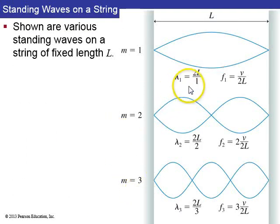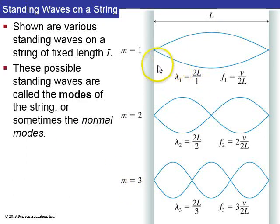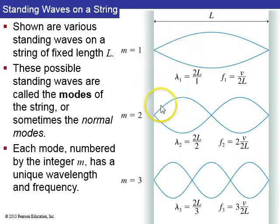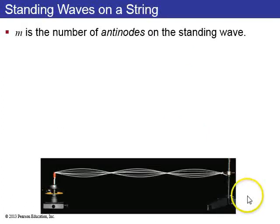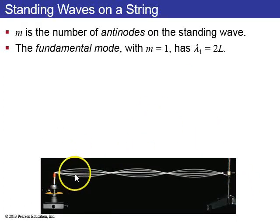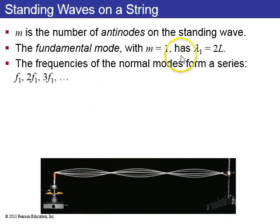And shown here are various standing waves for a string of fixed length L. Here is M equals 1, sometimes called the fundamental mode. And here are the other modes. This is the M equals 2 mode, or the second harmonic. Third harmonic is the M equals 3 mode. Each mode is numbered by an integer M. You see also M equals 4 mode, shown here. And here are the wavelengths and the frequencies of all these different modes. It turns out that M, that integer, is the number of antinodes on the standing wave on the string. So the fundamental mode has one antinode in the middle, and its wavelength is just 2L.